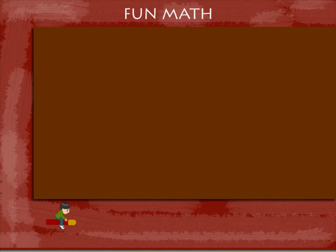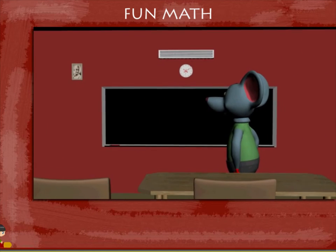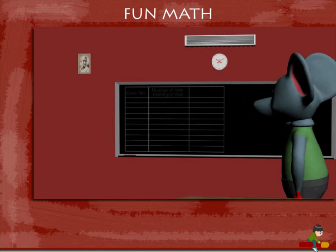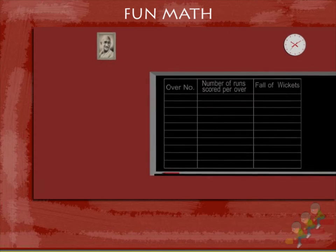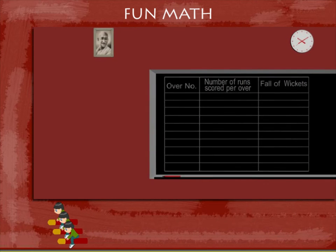Fun math. Toby Mouse has a table made on the board. The first column is for over number, the second is for number of runs scored in each over, and the third column is for recording the fall of wickets.